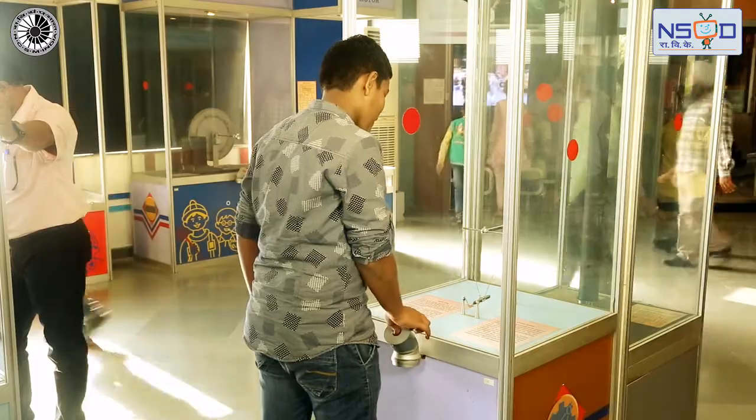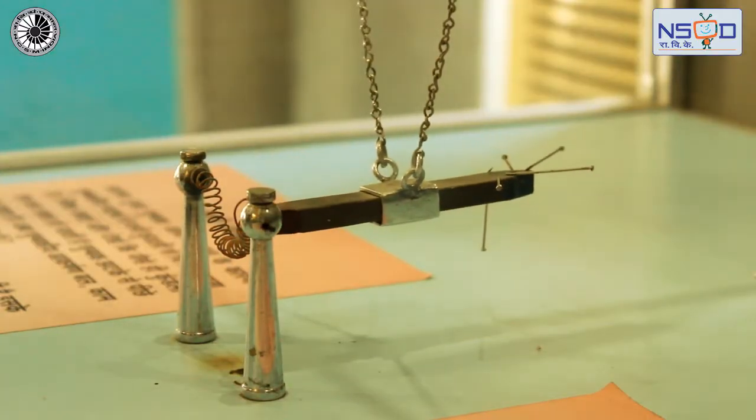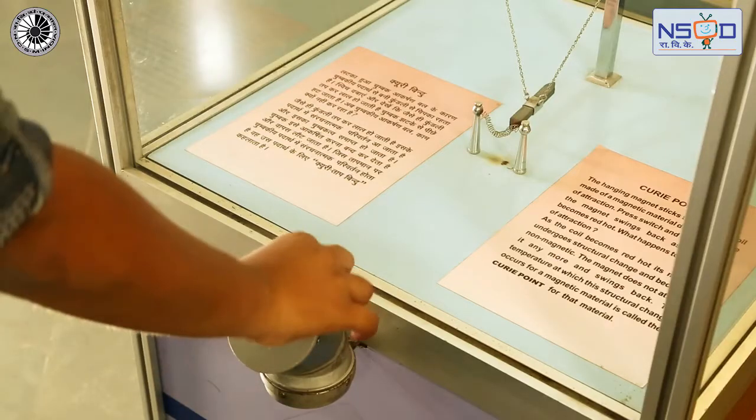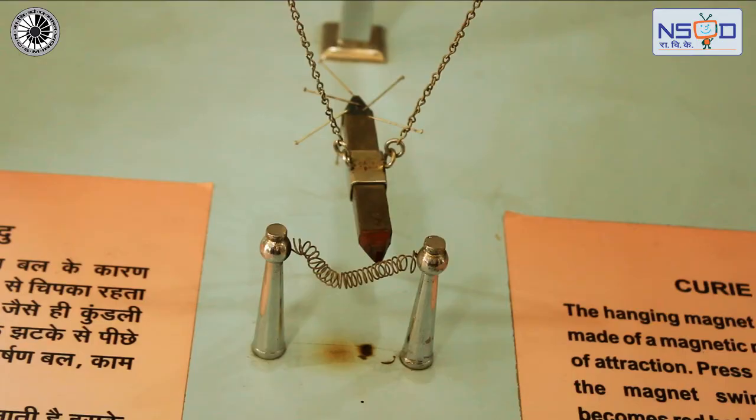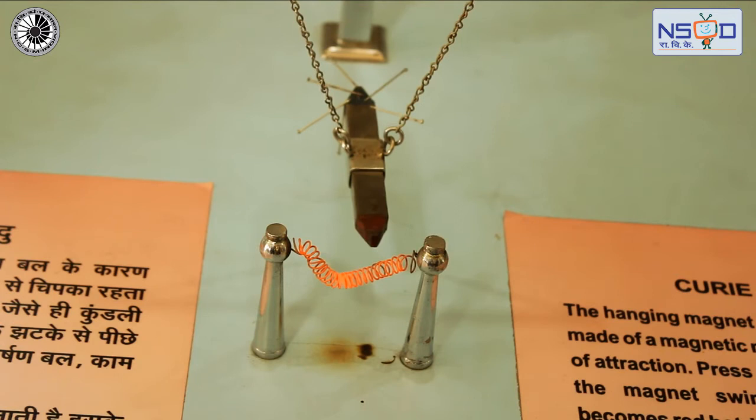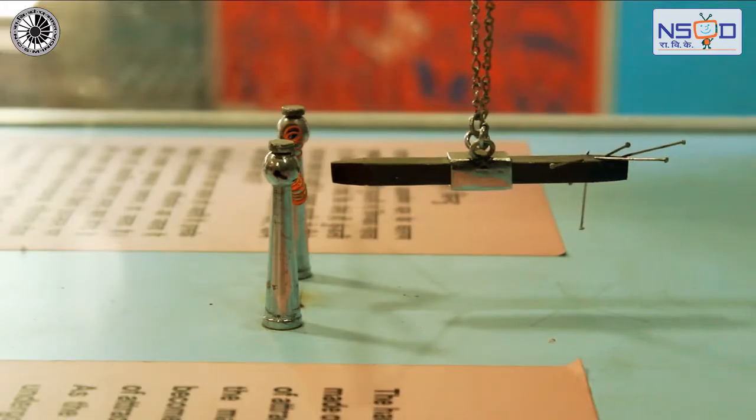When you bring a piece of magnet towards an iron coil, it will be attracted. But when you heat the iron coil to a high enough temperature, you will find that the magnetic piece loses its ability to be magnetized.